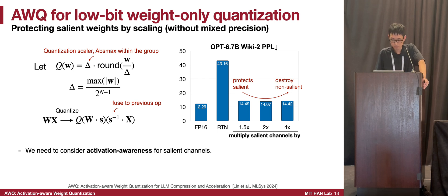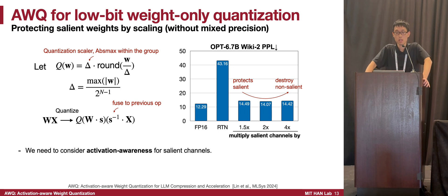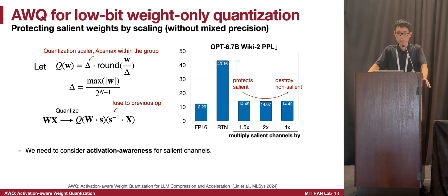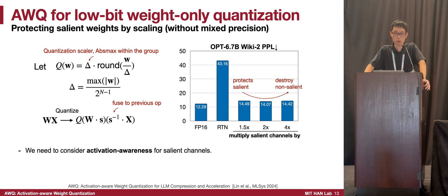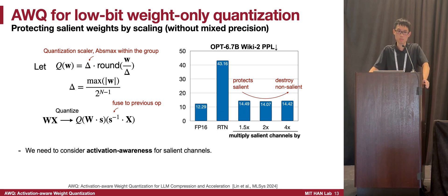We developed a method called protecting the salient weights by scaling. After identifying the salient channels by activation magnitude, we scale up these salient channels. Notice it's scaling up instead of scaling down. If we scale up these channels by 1.5x, accuracy recovers quite quickly. Continuing to increase the scale to 2x further improves perplexity. But if the scale factor is too large, perplexity degrades again.